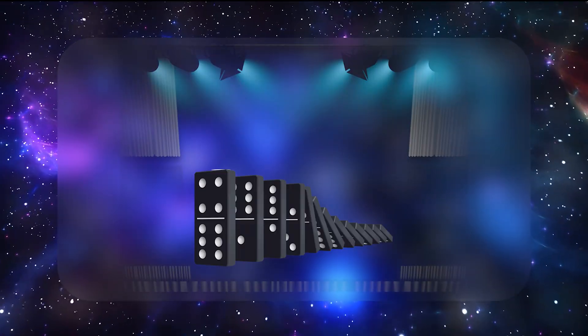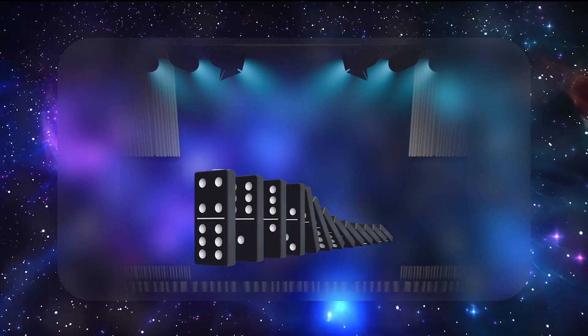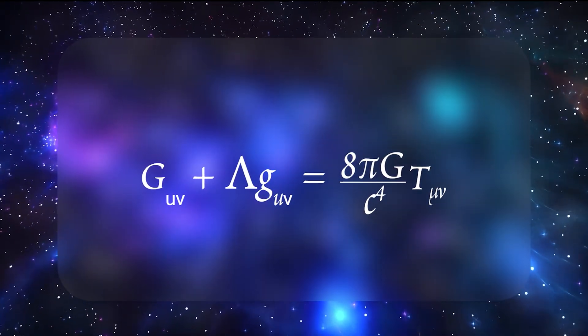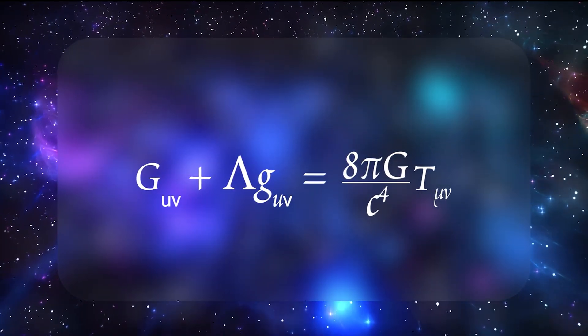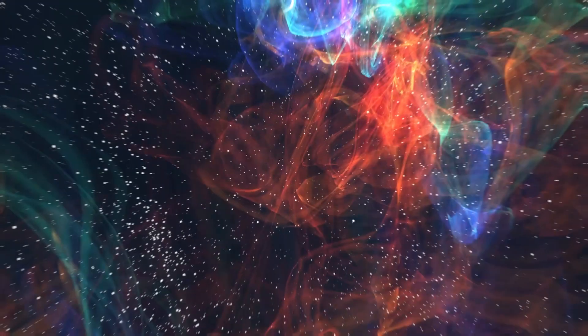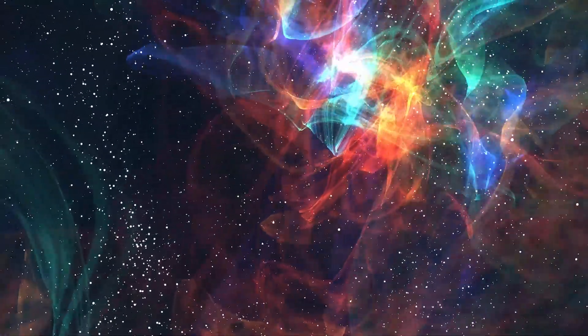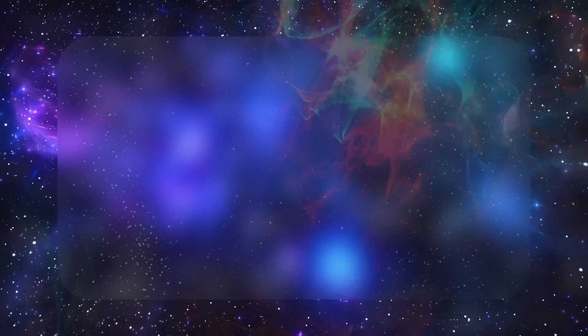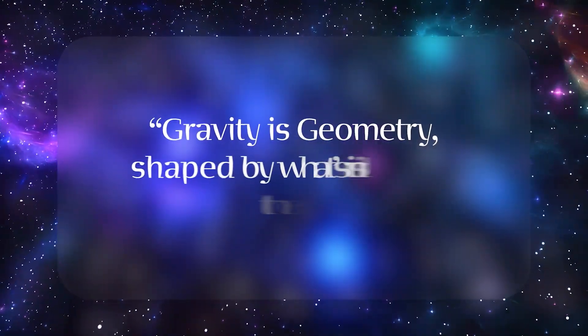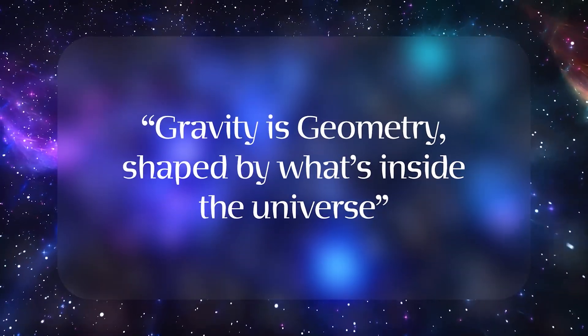It's a neat cause and effect dance, all spelled out in one line of algebra that's surprisingly short yet unbelievably broad in scope. Each symbol and the constants plays a distinct role, capturing geometry, uniform vacuum effects, measuring rods, cosmic currency conversions, and energy distributions. Combine them, and you get the simplest yet most profound statement: gravity is geometry, shaped by what's inside the universe.